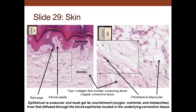In skin, the epidermis interacts with the dermis through rete pegs of the epidermis and dermal papillae projecting upward. The dermis contains fibroblasts and collagen fiber bundles running in different directions—this is dense irregular connective tissue, with few cells and lots of fibers. Epithelium on the surface is avascular and must receive nutrients, oxygen, and metabolites from the connective tissue below via diffusion from blood vessels.